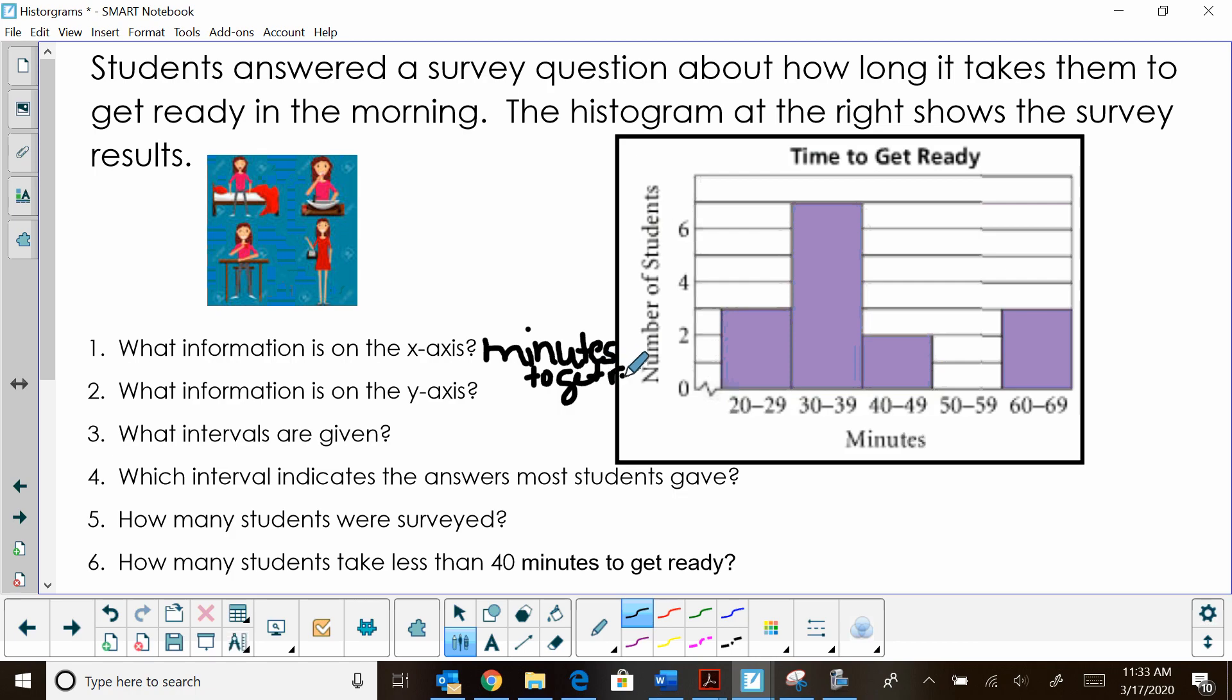Okay, what information is along the y-axis? Well, this is how many students responded or the number of students. So I'm just going to put for space sake, just the word student responses or the number of students. Okay, so our x-axis represents the time and the y-axis represents the number of students that responded to those times.